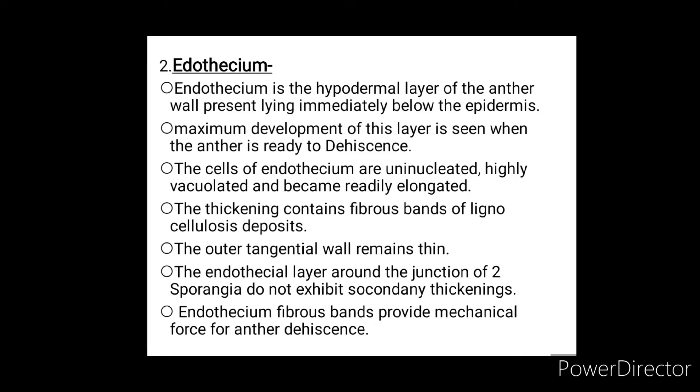The thickening contains fibrous bands of lignocellulosic deposits. The outer tangential wall remains thin. The endothecial layer around the junction of the two sporangia does not exhibit secondary thickenings. The endothecium fibrous bands provide mechanical force for anther dehiscence.